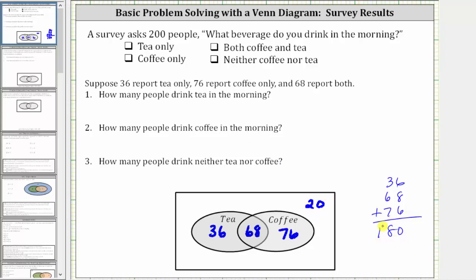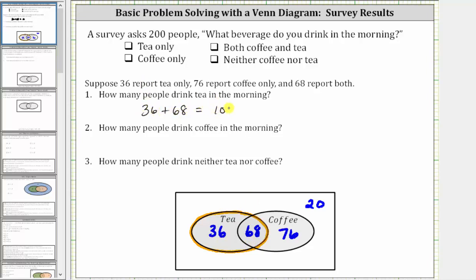Now let's answer the questions. The first question is: how many people drink tea in the morning? Here's the set of tea drinkers. There are 36 plus 68 tea drinkers, and 36 plus 68 is equal to 104. So 104 people drink tea in the morning.